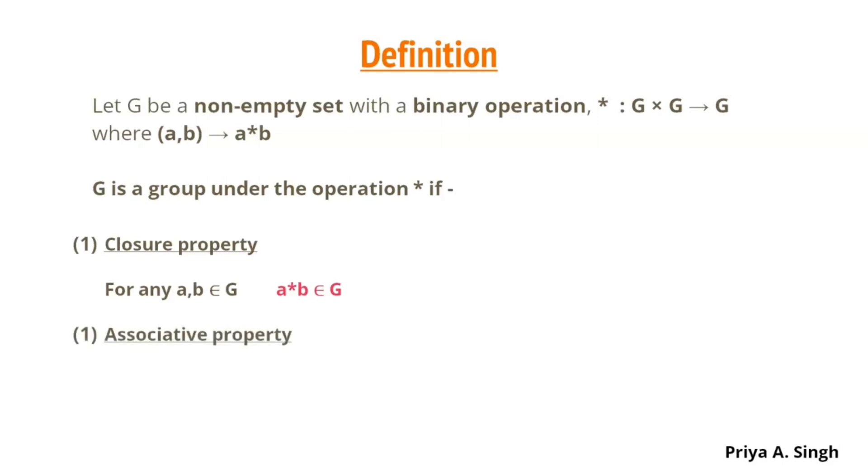The next property is the associative property. For any three elements in G, if A operated with B star C is same as C operated with A star B.